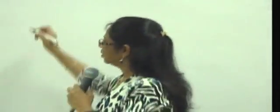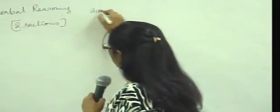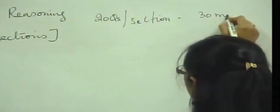How many questions do we have per section? We have 20 questions. On the two sections, we have 20 questions per section. And we have 30 minutes to do these questions.